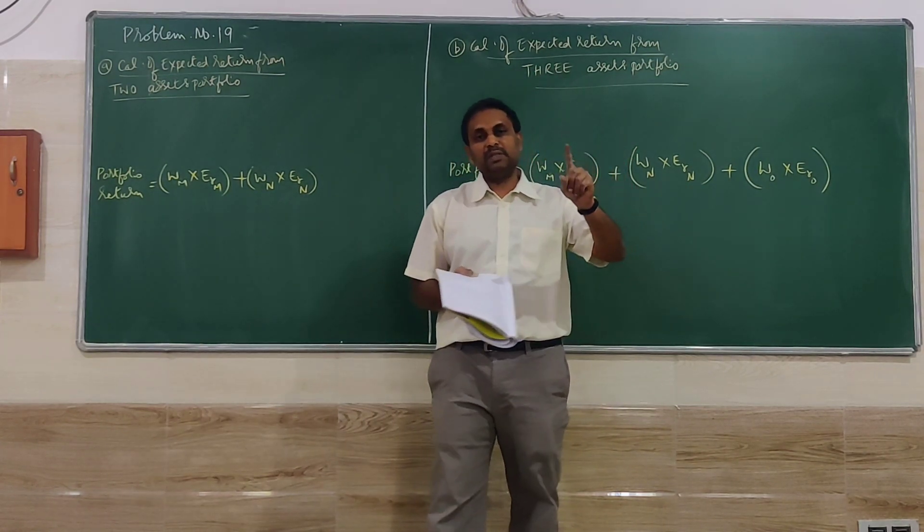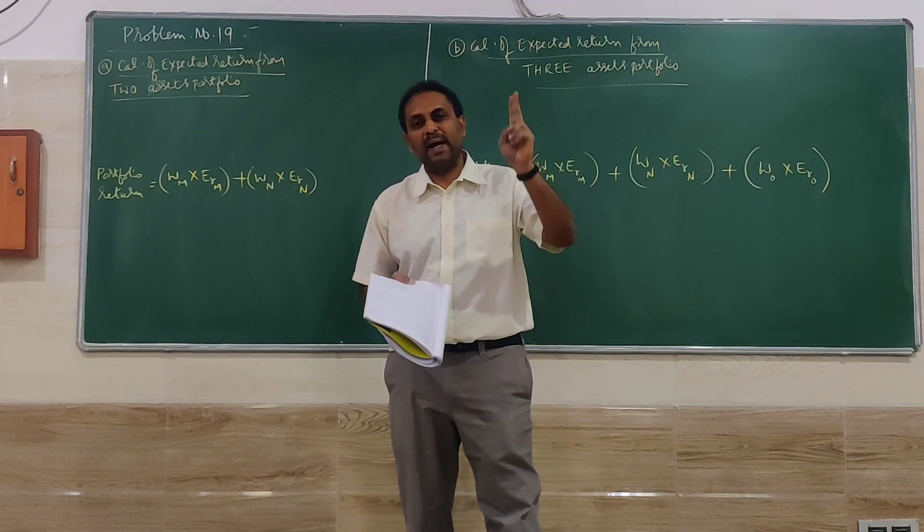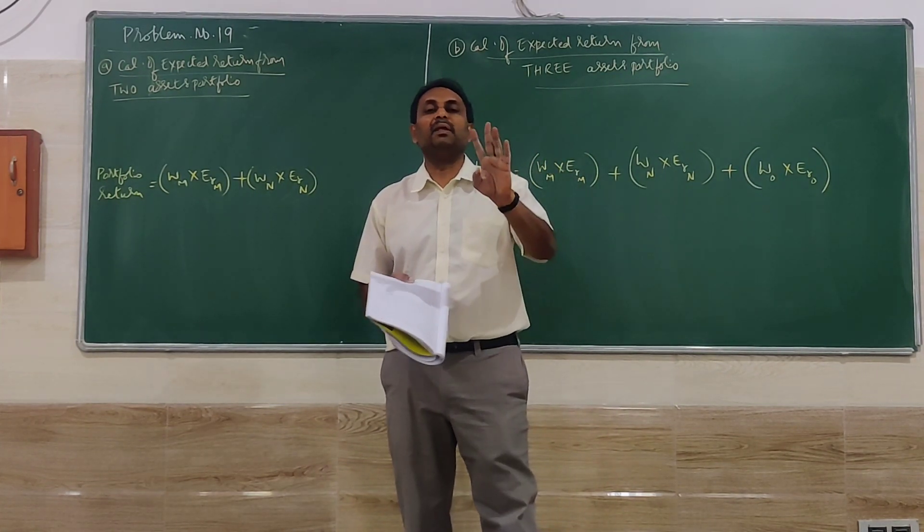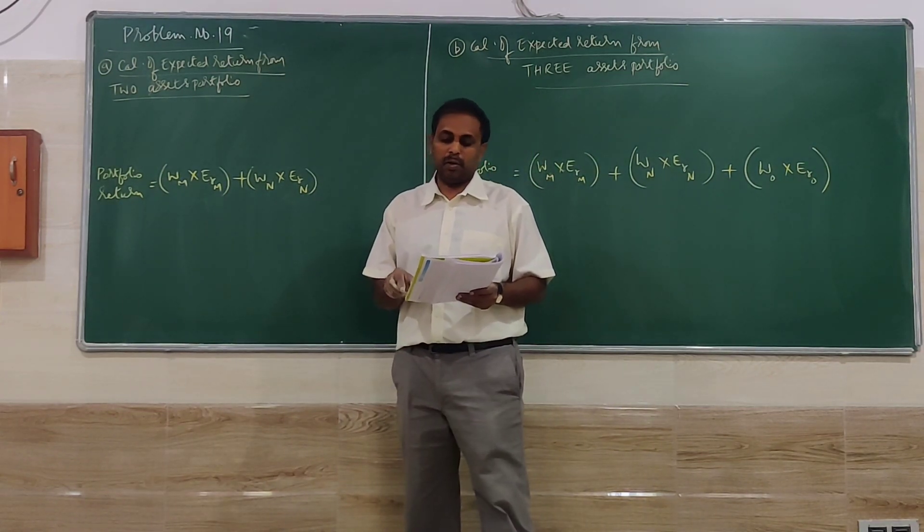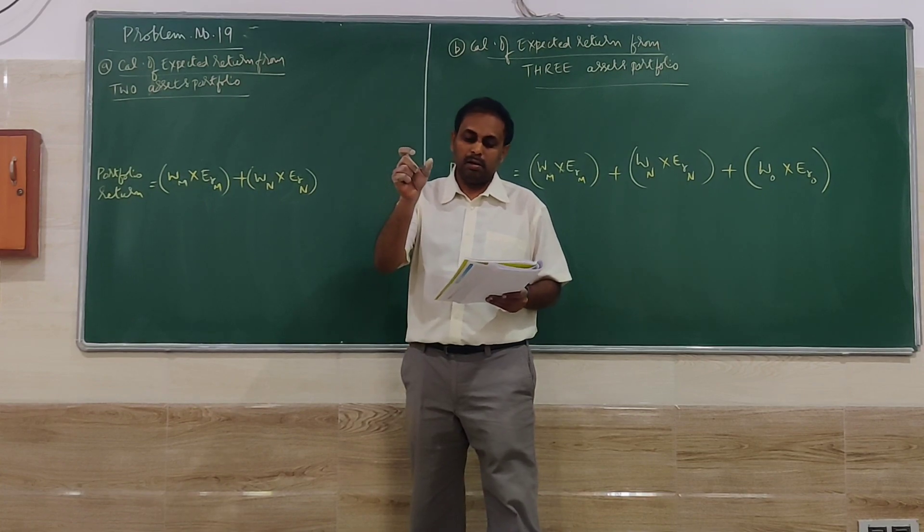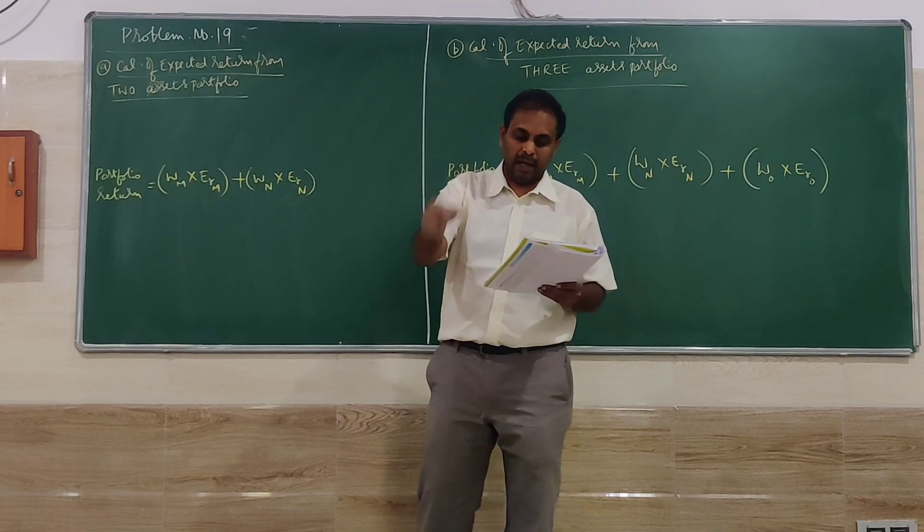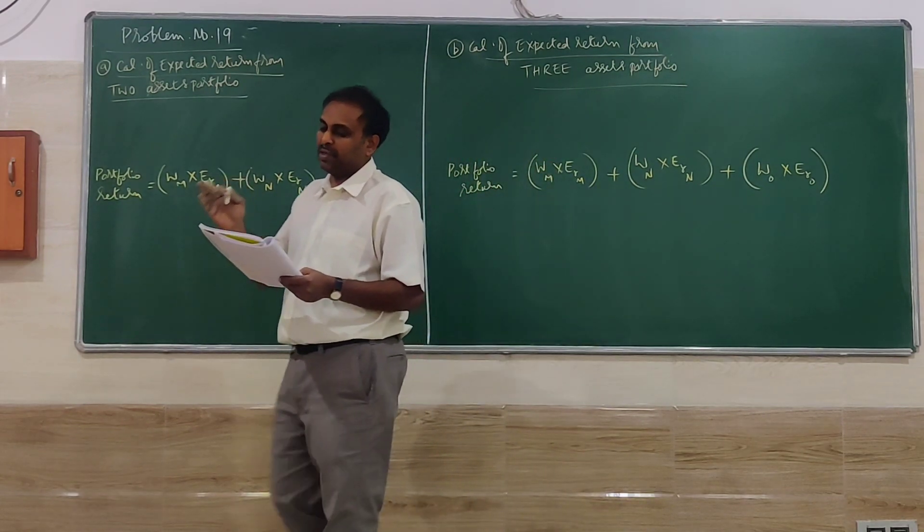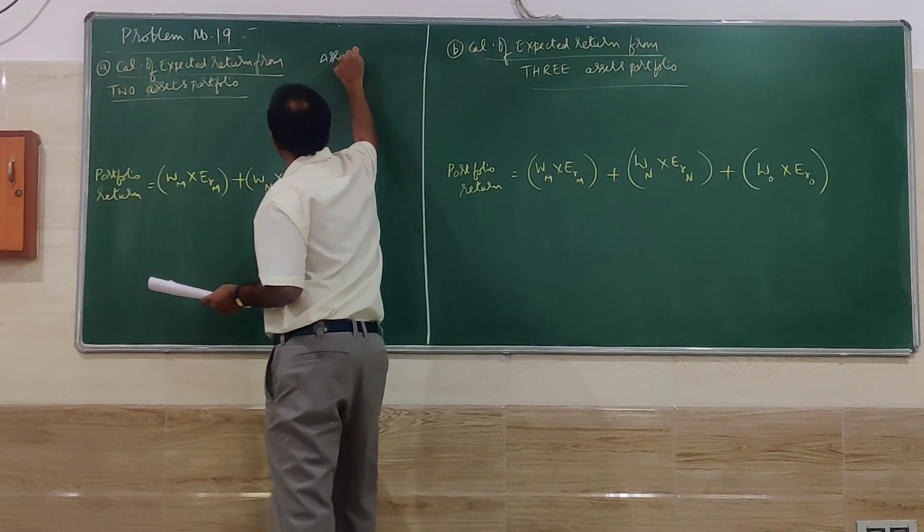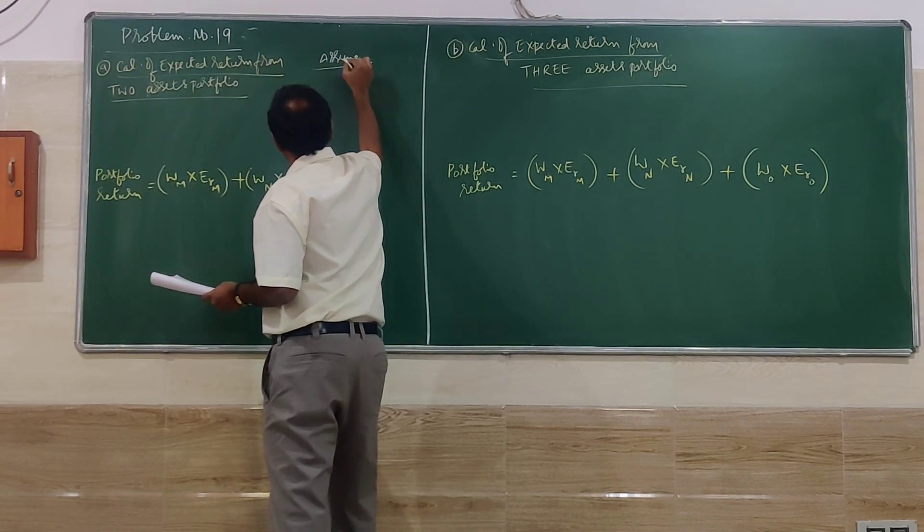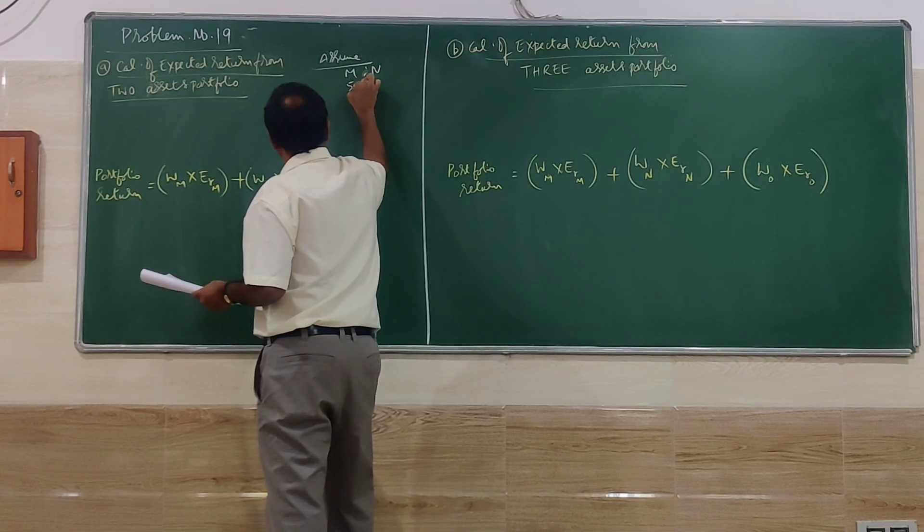So if the investor invests in both stocks, M as well as N, what will be the return? That is the first question. Here they have not mentioned the weightage of the investment in M and N. They just say the investor wants to invest in both securities, so assume 50% each.